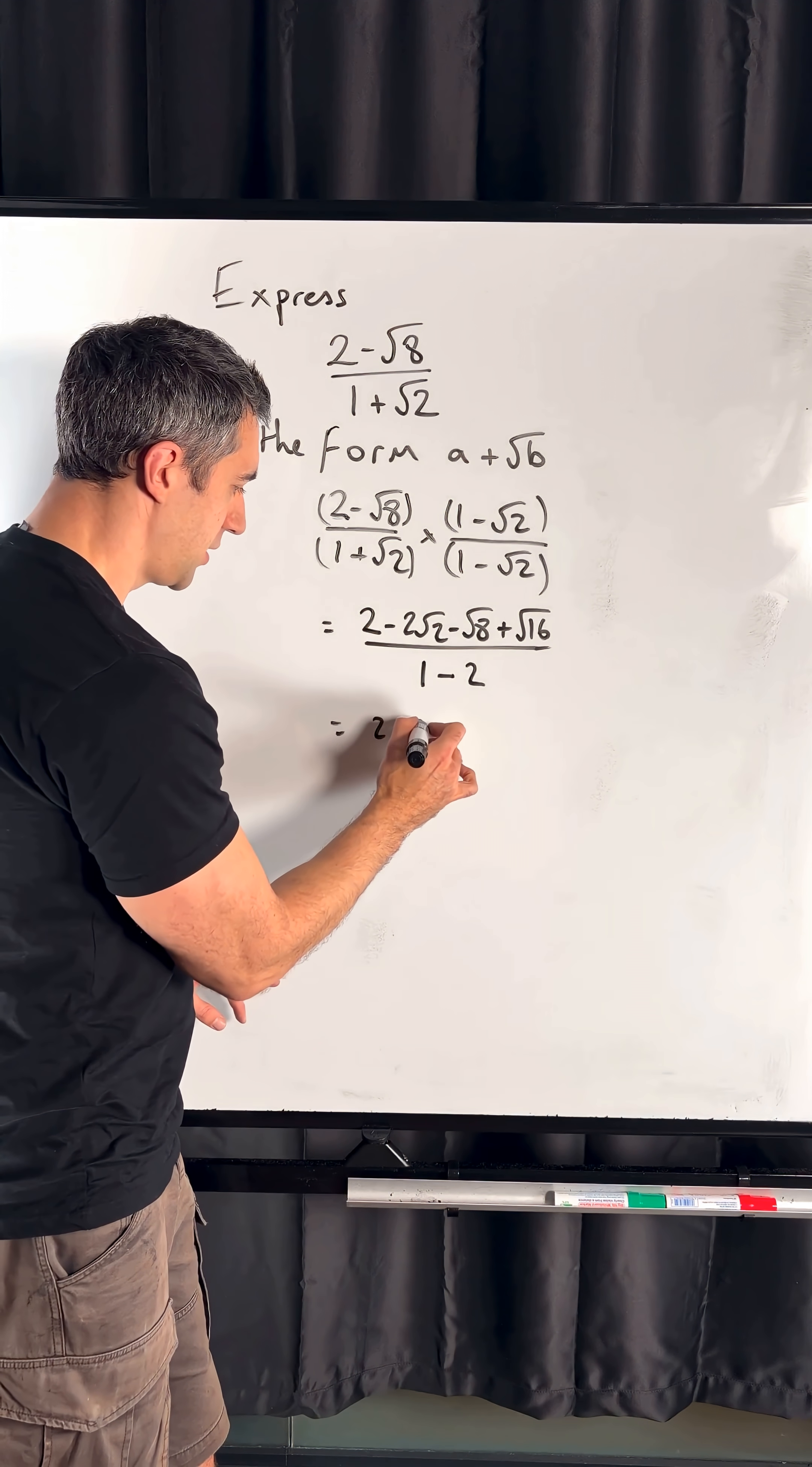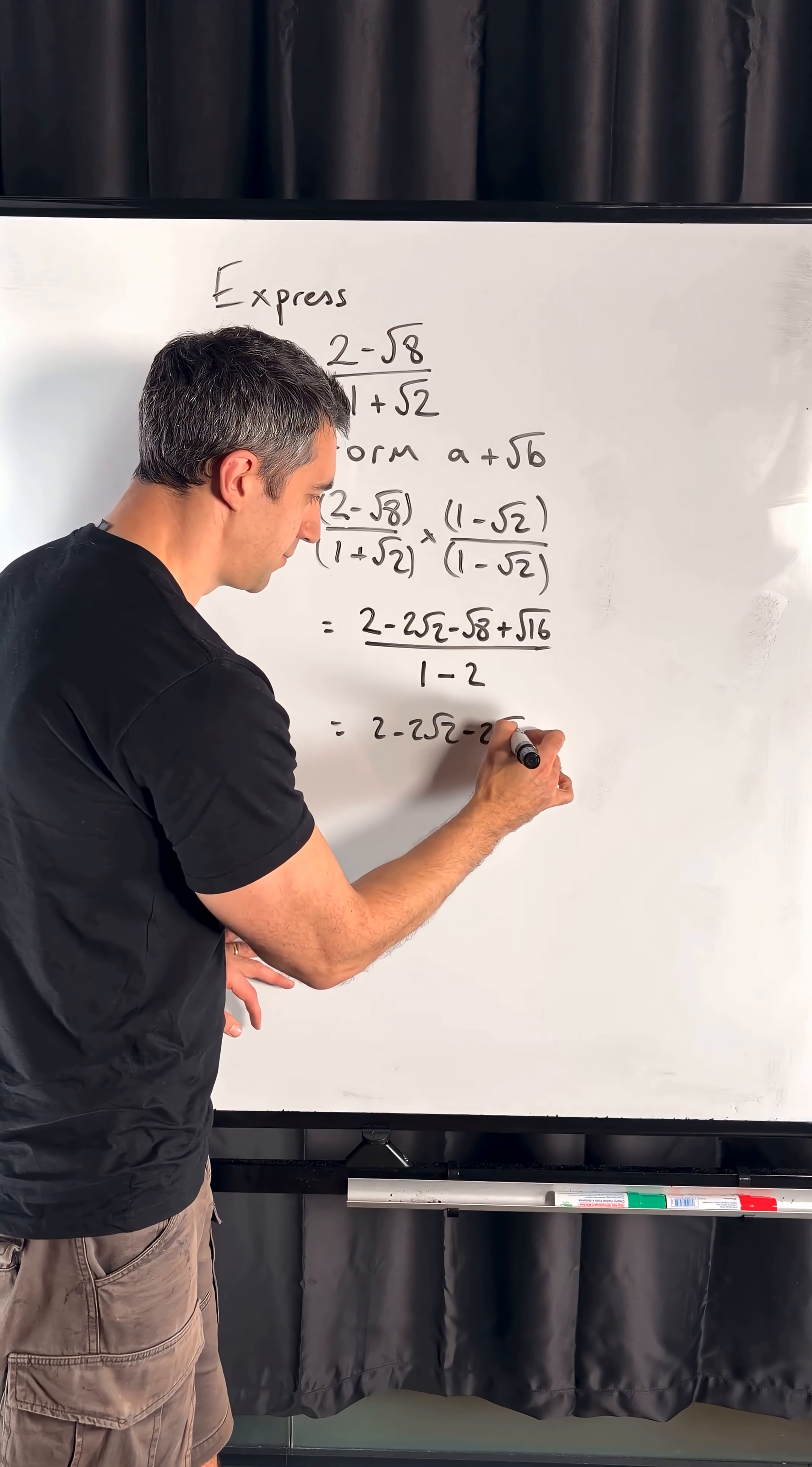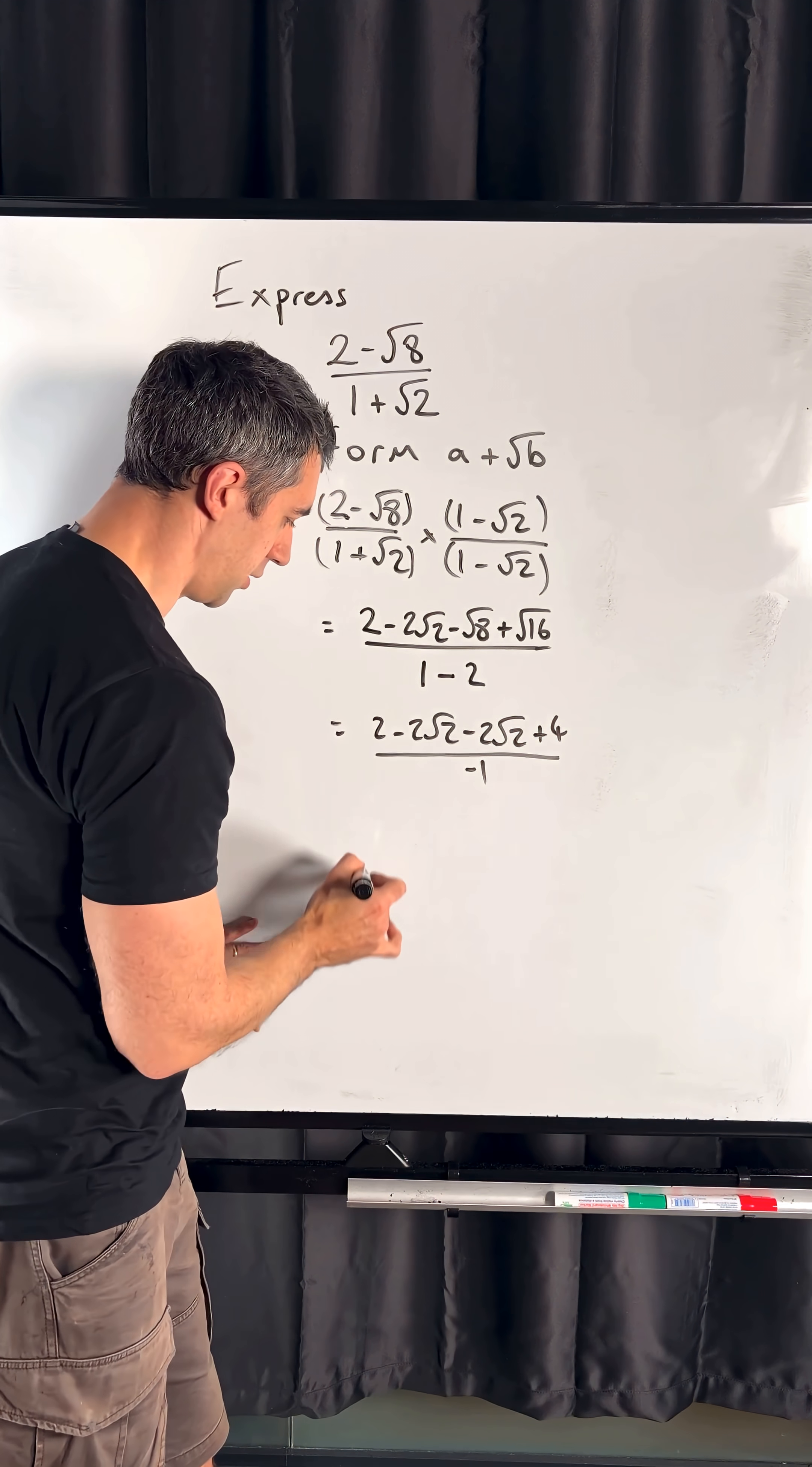So if we go through and simplify as much as we can, we've got 2 minus 2 root 2, now the root 8 is going to be 2 root 2. And then root 16 is just 4, all divided by 1 minus 2 or minus 1.